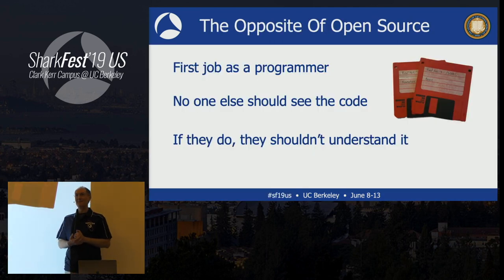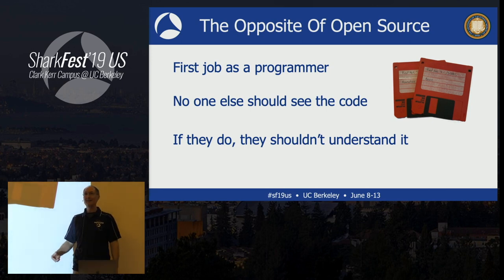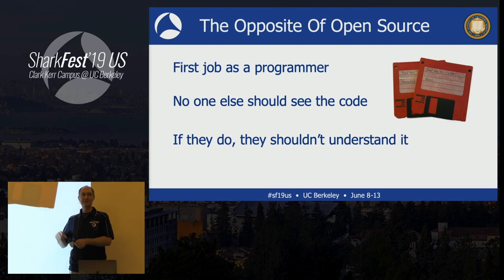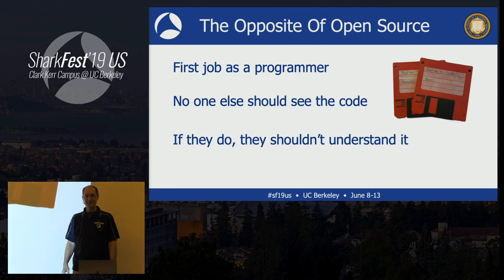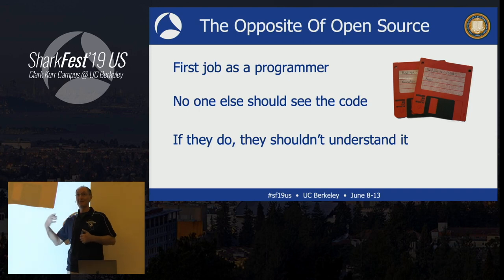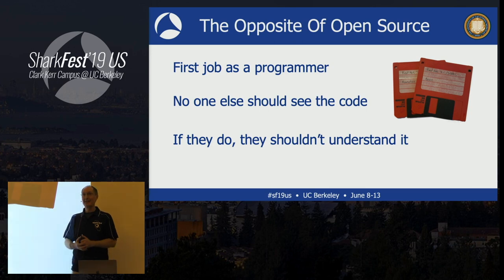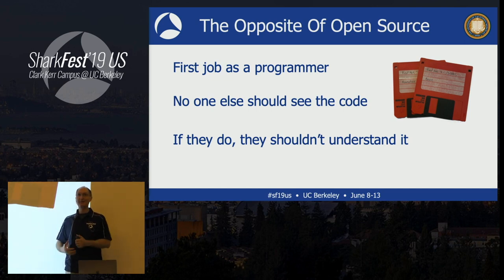My very first job as a programmer was when I was still studying computer science. I got a job at a one-person company that made automobile insurance rating software. You'd go into your insurance agent, they would type all your information into this program, and it would spit back a quote for auto insurance. As I said, it was a one-person operation. He was very protective of its source code because this was his livelihood — this is how he made a living. That dependency on the code led to some interesting decisions. The first one was that no one should see this code.